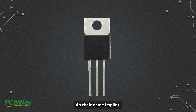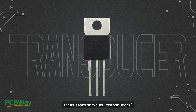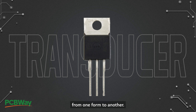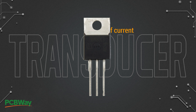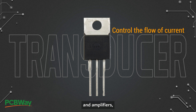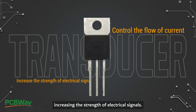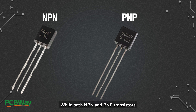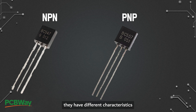As their name implies, transistors serve as transducers, transforming electrical signals from one form to another. They can function as both switches, controlling the flow of current, and amplifiers, increasing the strength of electrical signals. While both NPN and PNP transistors have similar operating principles, they have different characteristics that make them suitable for specific applications.